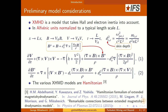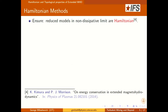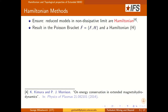The various extended MHD approximations you get from this system have been shown to be Hamiltonian by Abdelhamid, Kawazura, and Yoshida, which was later confirmed by us. The reason people care about Hamiltonian methods is because they allow you to show that a reduced model in the non-dissipative limit will conserve energy — and there are some models in the literature that do not.